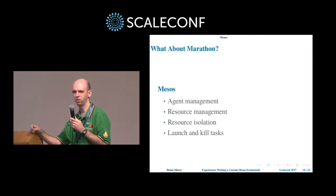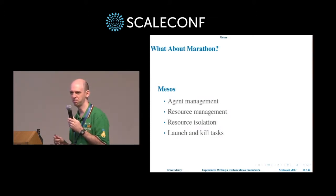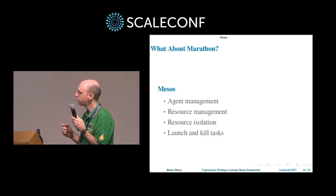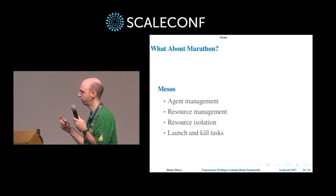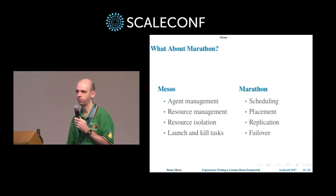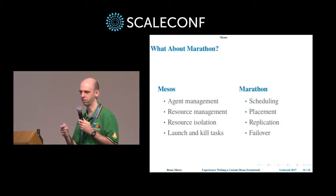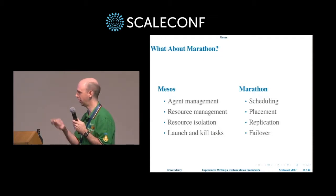You may have heard of Marathon. Marathon is the de facto standard scheduler that people put on top of Mesos. Mesos plus Marathon is sort of equivalent to Kubernetes. Mesos does mostly bookkeeping — it tracks all agents, their resources, how much has been allocated, where tasks are running, and does some resource isolation. Marathon does all the clever stuff on top: you define an application, and it makes it so. If you say you want five instances of your web server, it will make sure you always have five. If one falls over, it starts another one. It covers failover as well.